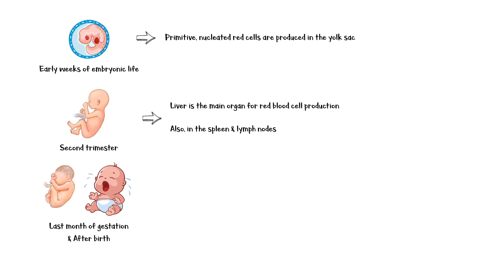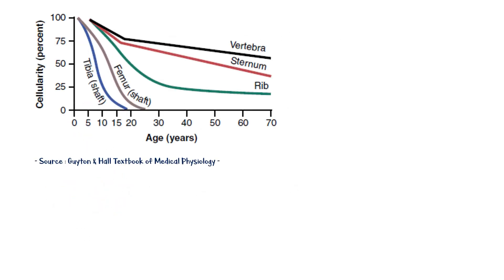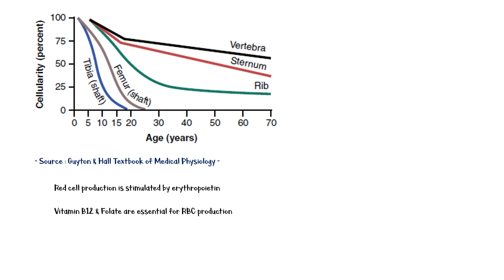During the last month or so of gestation and after birth, red cells are produced exclusively by the bone marrow. This graph shows the relative rates of red blood cell production by different types of bones after birth. Red cell production is stimulated by erythropoietin hormone, and vitamin B12 and folate are essentially required for the synthesis of red cells.